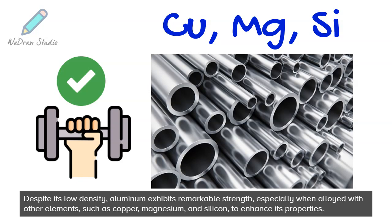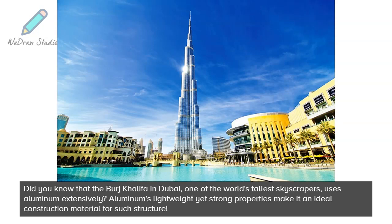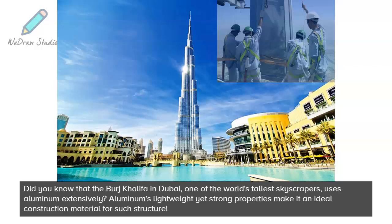Did you know that the Burj Khalifa in Dubai, one of the world's tallest skyscrapers, uses aluminum extensively? Aluminum's lightweight yet strong properties make it an ideal construction material for such structures.